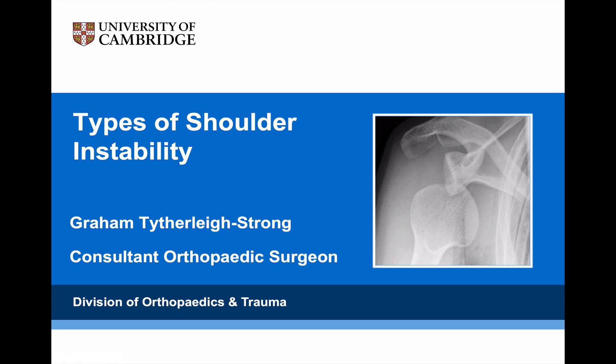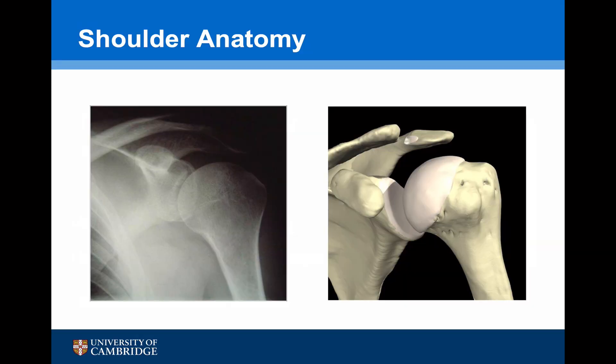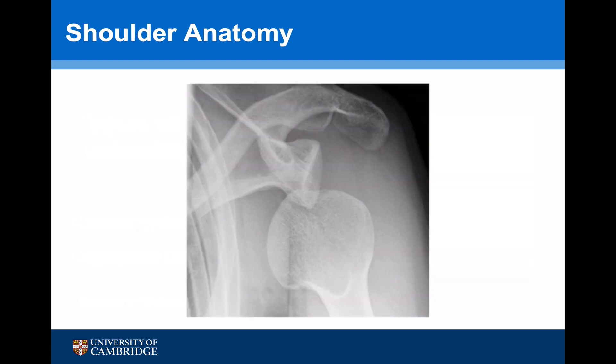This talk focuses on types of shoulder instability, specifically the glenohumeral joint, which has a large spherical humeral head with a relatively shallow glenoid. This configuration allows the glenohumeral joint to be the most mobile joint in the body, but at the same time it is inherently unstable and is the most easily dislocated joint in the body.